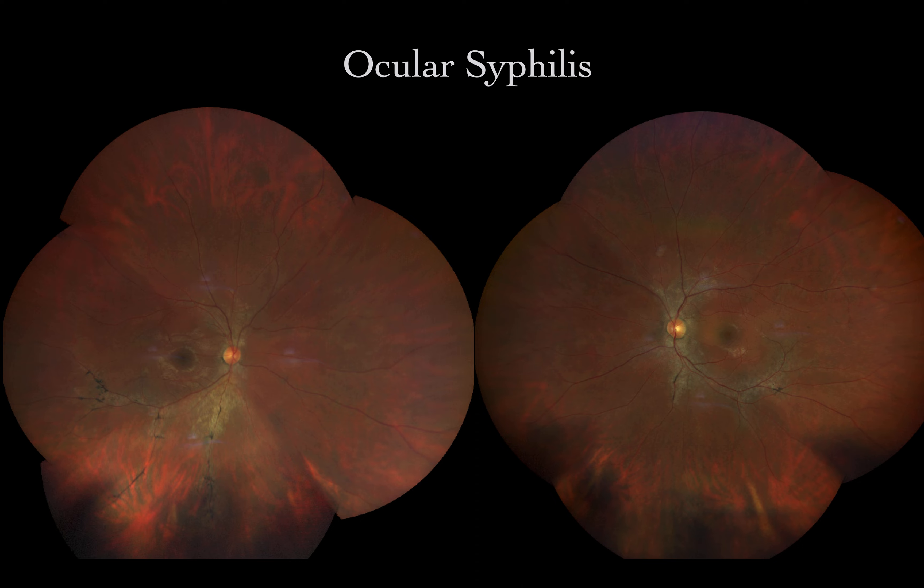More importantly, once syphilis is diagnosed in the eye — ocular syphilis — it must be managed as neurosyphilis. That means patients must undergo intravenous penicillin instead of intramuscular or oral administration. Patients must also undergo lumbar puncture with analysis of spinal fluid for diagnosis and monitoring.